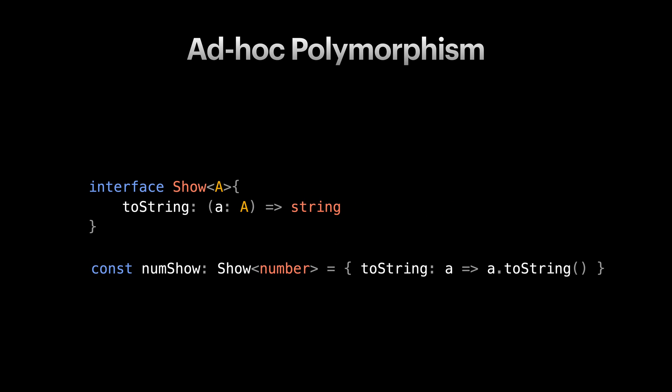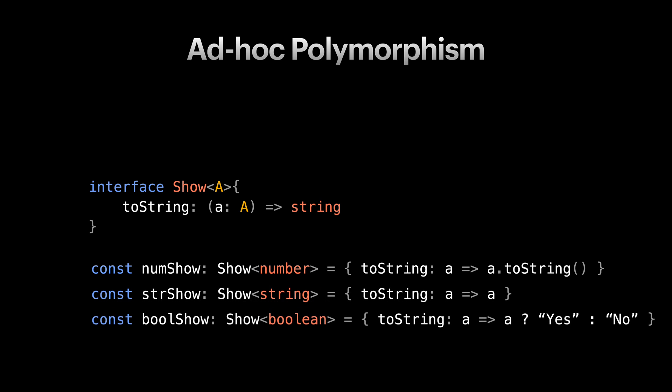If we don't have an implementation then how can we call it? In order to call it we first need to provide an implementation for our interface and toString method. As you see each implementation is tied to a specific type. For example the toString method in the numShowConstant has a different implementation than the toString method in the strShowConstant. In ad hoc polymorphism you need to specify a distinct implementation for each of the types you want to support, while in parametric polymorphism you have only one implementation that works for a wide range of types.